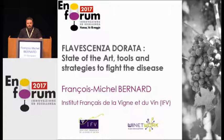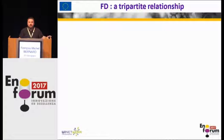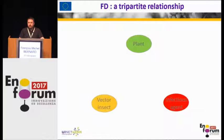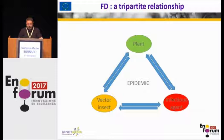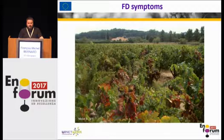You can also have access to the database mentioned by Fanny, and you will find the details for all the products. First of all, what is FD? It is, as is the case for GTDs, a complex relationship between the plant, the vector insect, and the infectious agent, the carrier. You can have several insects that act as carriers, and the interaction between these three elements will cause the epidemic character of Flavescence Dorée, which can spread more or less rapidly.